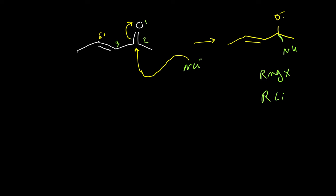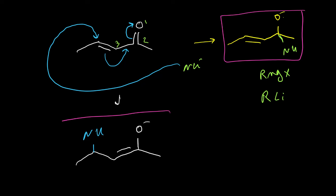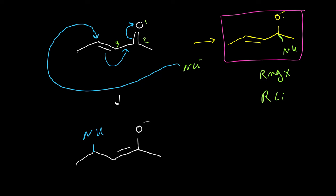But most nucleophiles attack the beta position. If we have addition of a nucleophile to the beta position, the pi bond moves to the alpha carbon and as a result we get the enolate ion with the nucleophile on the beta position. This intermediate is more stable because the anion has a resonance form — the oxygen is an enolate with resonance. This type of addition is called Michael addition or conjugate addition, and the addition happens at 1,4.